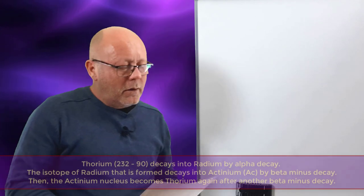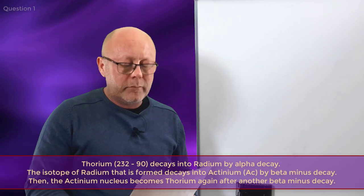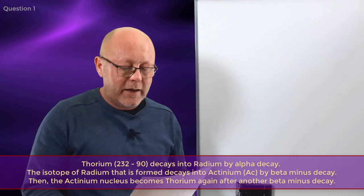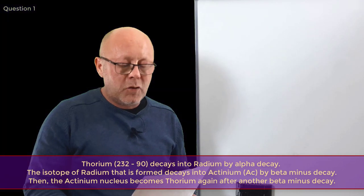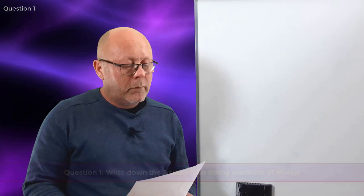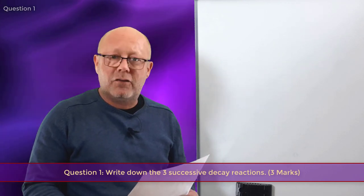Did you manage to answer all the questions? Let's review them together, one by one. Thorium-232 decays into radium by alpha decay. The isotope of radium which is formed decays into actinium by beta-minus decay. Then the actinium nucleus becomes thorium again after another beta-minus decay. Question one: Write down the three successive decay reactions, three marks.